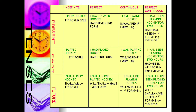So present indefinite means 'I play hockey' — main hockey kheelta hoon. When I say this, it is very indefinite; nobody knows definitely when. We are not clear which point of time we are referring to. Similarly, past indefinite: 'I played hockey' — when exactly is not clear. It is past, meaning before the present, but not definitely known when in the past.